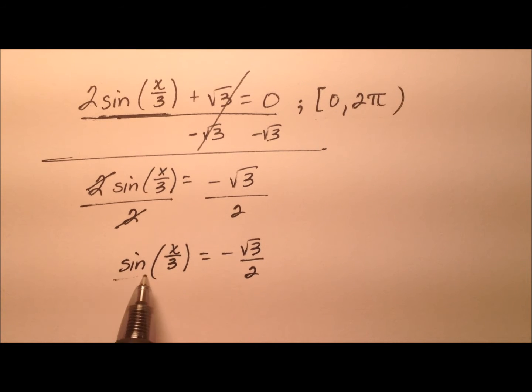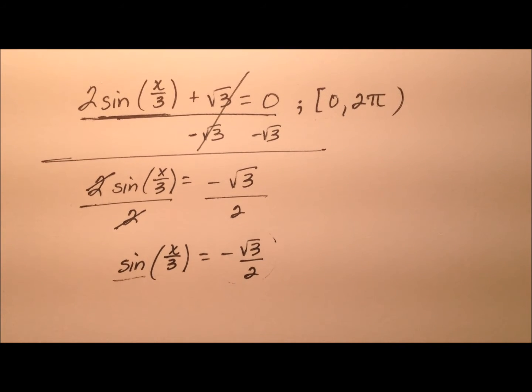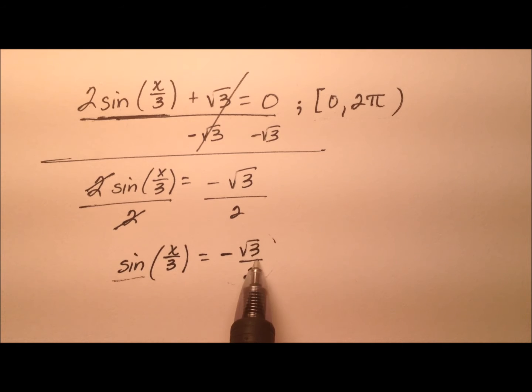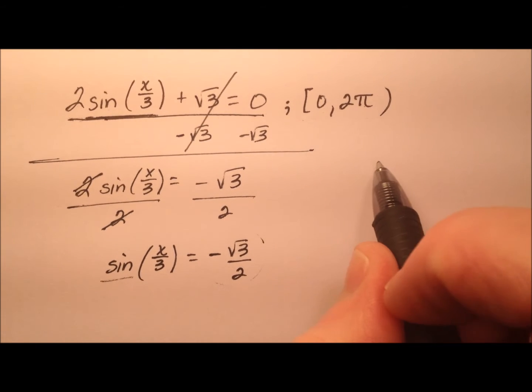So first of all, I need to know where sine is going to be negative square root of 3 over 2. We can break that up into two pieces: the negative part, and we look at the quadrants for that, and then square root of 3 over 2. So let's look at the reference angle first.